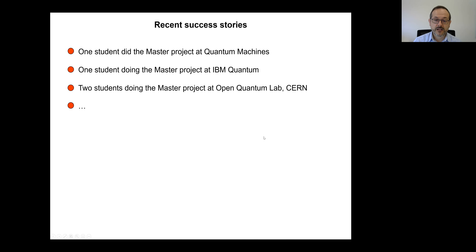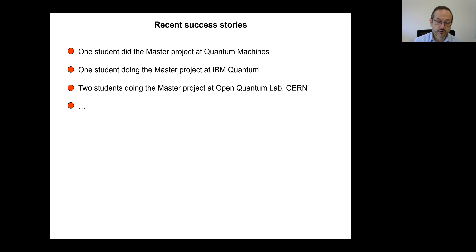Let me give you some success stories. If you opt for a project in our lab and you are really excellent, you may have the opportunity to go for your master's project elsewhere — either in very good laboratories around the world or in industry. One of our students went for his master's project at Quantum Machines, another one at IBM Quantum in Rüschlikon, and I have two students right now — a PhD student and a master's student — at the Open Quantum Lab at CERN.